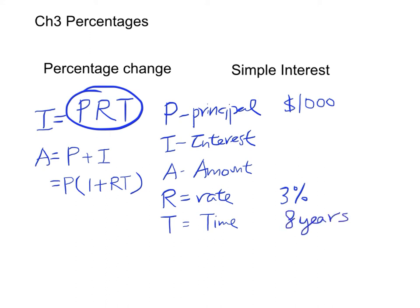Therefore I will be P times R times T: one thousand dollars times three percent times eight years, therefore this will be two hundred forty dollars.